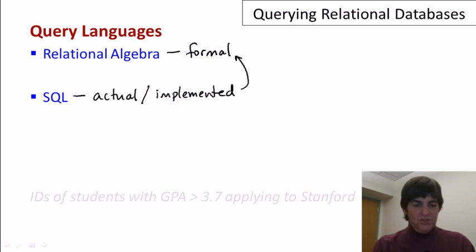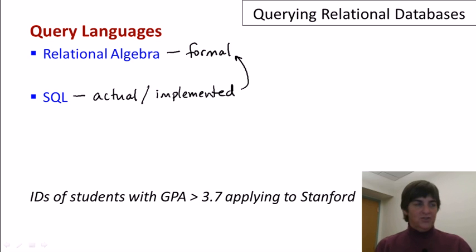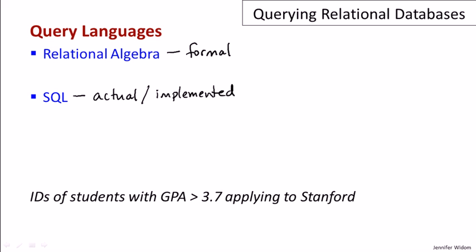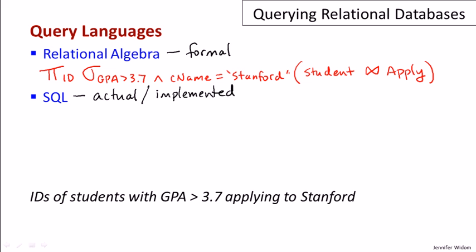Now, let me just give you a flavor of these two languages. And I'm going to write one query in each of the two languages. So, let me get rid of this little line here. Let's start in relational algebra. So, we're looking for the IDs of students whose GPA is greater than 3.7 and they've applied to Stanford. In relational algebra, the basic operators of the language are Greek symbols. Again, we'll learn the details later, but this particular expression would be written with a pi, followed by a sigma. The pi says we're going to get the ID. The sigma says we want students whose GPA is greater than 3.7 and the college that the students have applied to is Stanford. And then that will operate on what's called the natural join of the student relation with the apply relation.